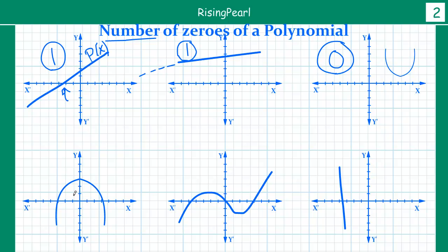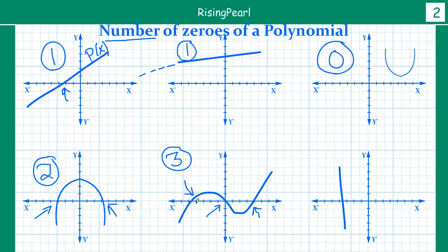For the fourth graph, we again have a parabola. This cuts the x-axis at one point and at two points, so this polynomial has two zeros. For the fifth graph, this is clearly not a parabola or a straight line — it cuts the x-axis at one point, two points, and three points, so this polynomial has three zeros. For the sixth graph, this cuts the x-axis at one point, so it has one zero.